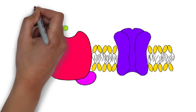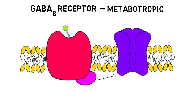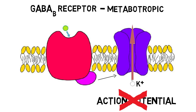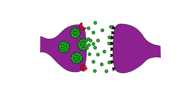GABA-B receptors are metabotropic, or G-protein coupled receptors. When activated, they frequently cause the opening of potassium channels. These channels allow positively charged potassium ions to flow out of the neuron, again making the neuron hyperpolarized and less likely to fire an action potential.